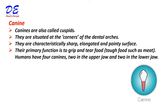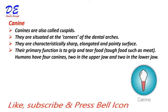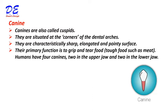Canines are also called cuspids. They are situated at the corners of the dental arches and are characteristically sharp and elongated with a pointy surface. Their primary function is to grip and tear tough food such as meat. Humans have four canines — two in the upper jaw and two in the lower jaw.